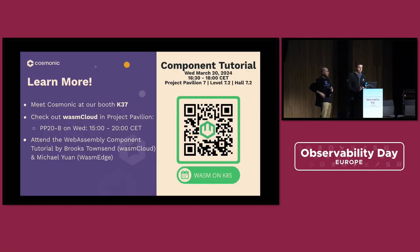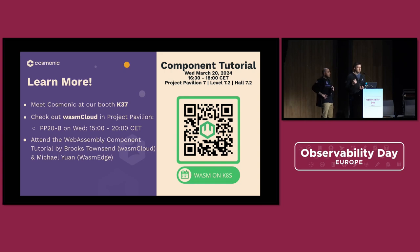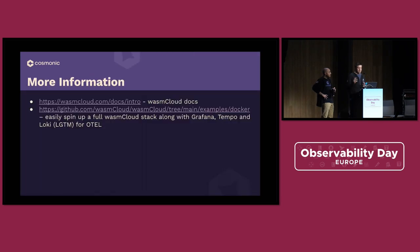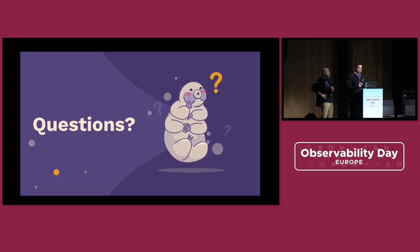With all that said, if you're interested in learning more, we have a booth on the solution showcase at the back in the startup area at K37 — come on by and we'd be happy to tell you more about WebAssembly. The WasmCloud project, being a CNCF project, has a slot on Wednesday from three to eight in the project pavilion, and we'd love to have you there. If you're interested in learning more about WebAssembly components, our colleague Brooks Townsend and Michael Yuan from the WasmEdge project are running a tutorial that the QR code here will add to your calendar. And if you want to learn more about WasmCloud itself, check out our docs on wasmcloud.com — the instrumentation setup we have for you to kick the tires on this stuff is also available in our GitHub. Thank you very much.